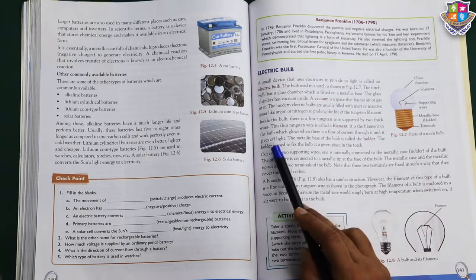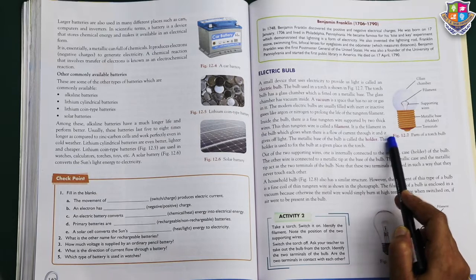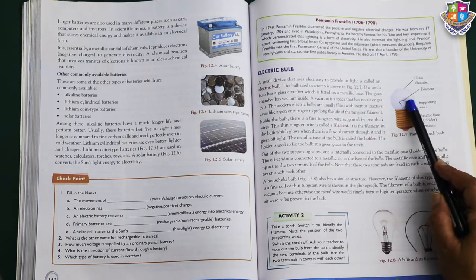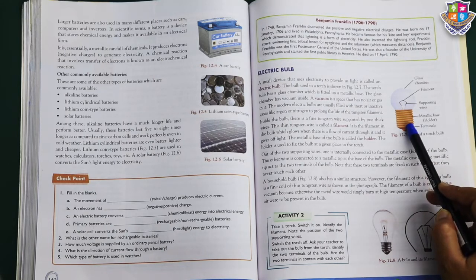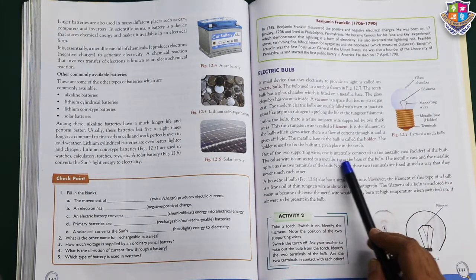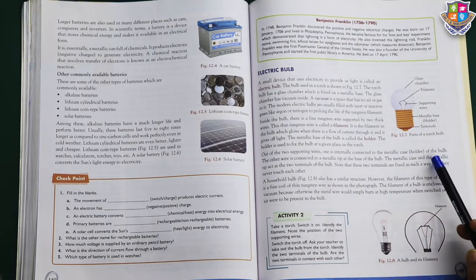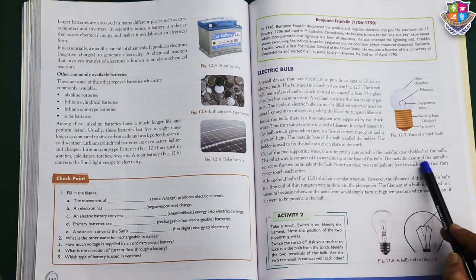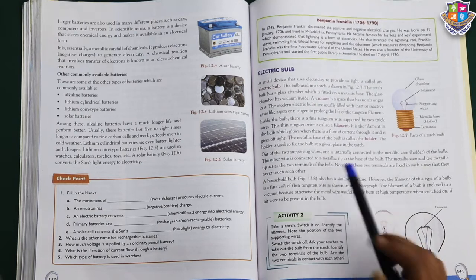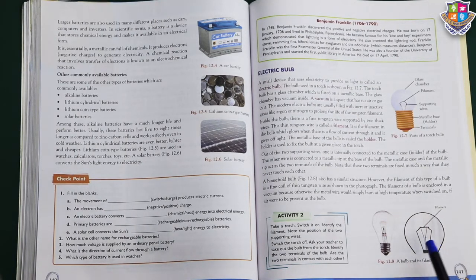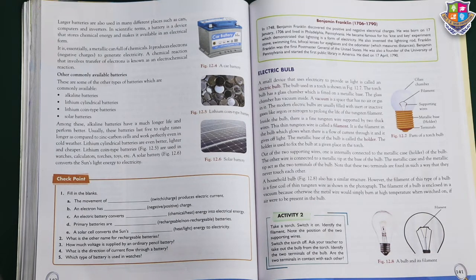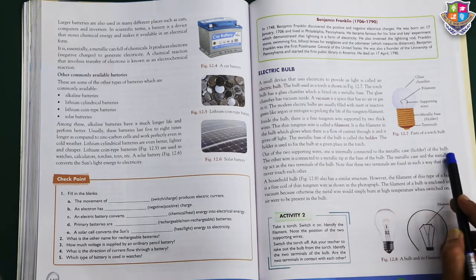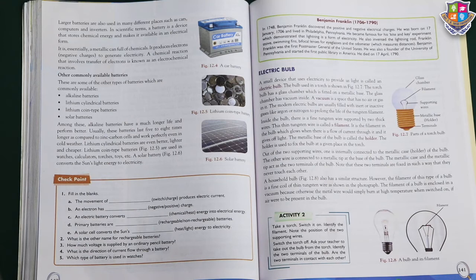Coming to this point, it is the filament in the bulb which glows when there is a flow of current through it and it gives off light. Where electric current passes, it goes into these wires and this filament glows. It has a holder also, a metallic holder. Out of the two supporting wires, one wire is internally connected to the metallic case. The other wire is connected to the metallic tip of the base of the bulb. The metallic case and the metallic tip act as the two terminals of the bulb. We always need two terminals for current to pass. Why? Because two charges are plus or minus. Always keep it in your mind.